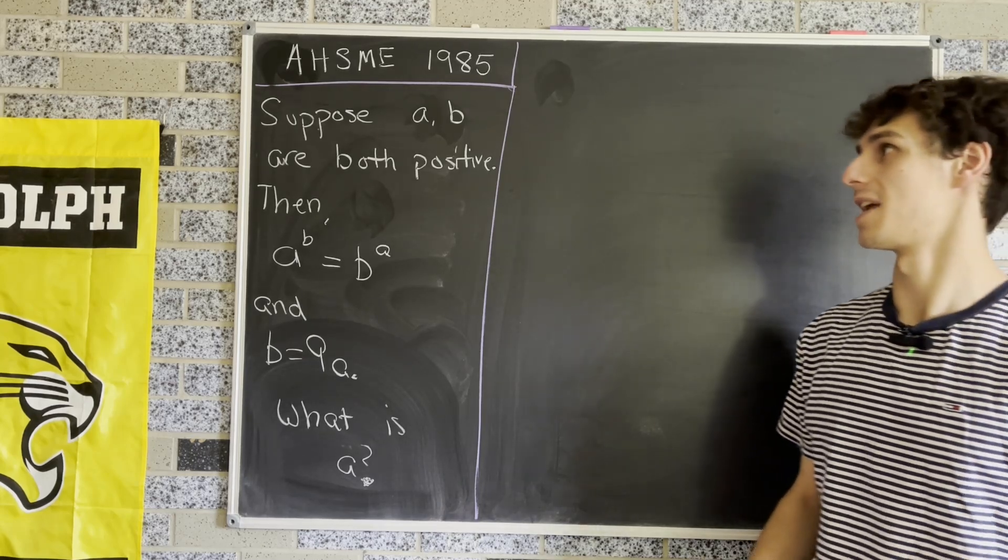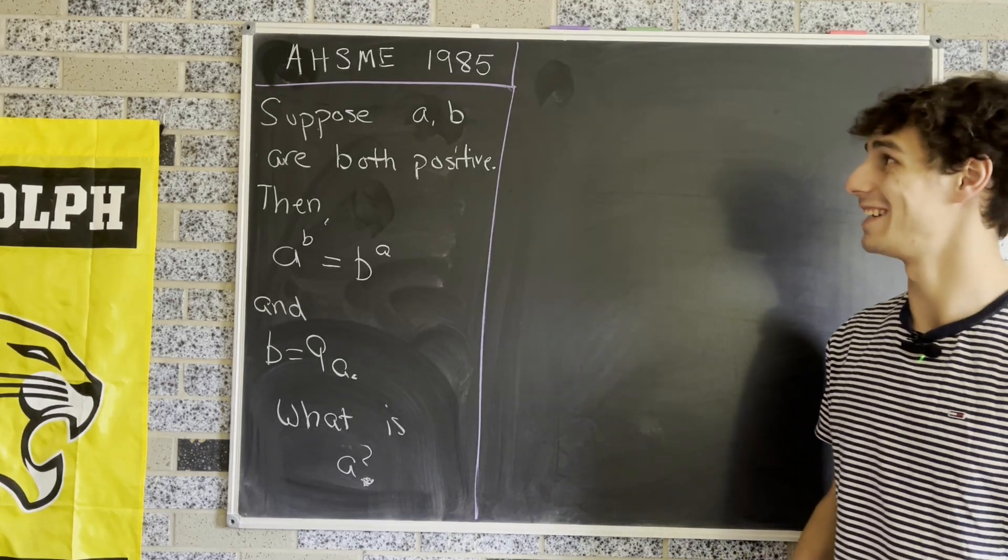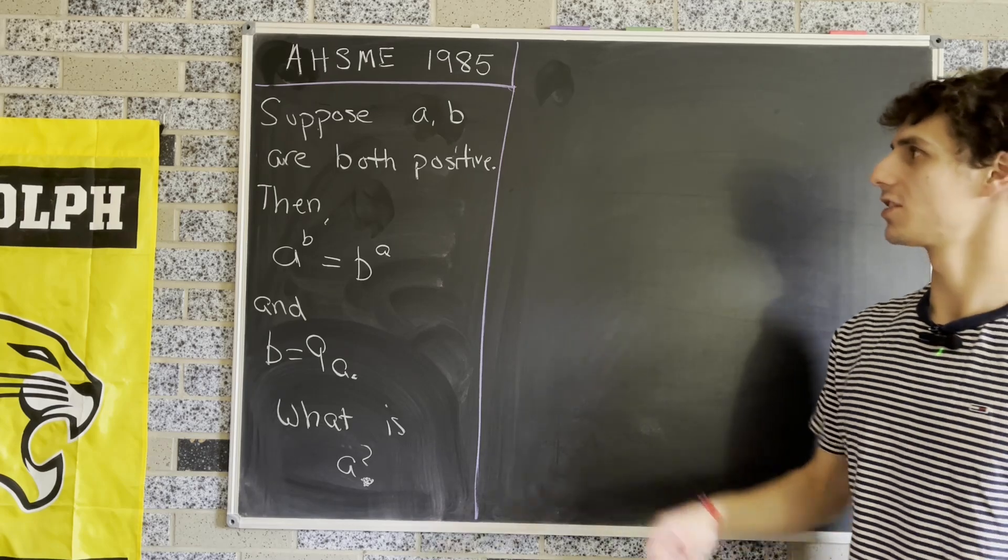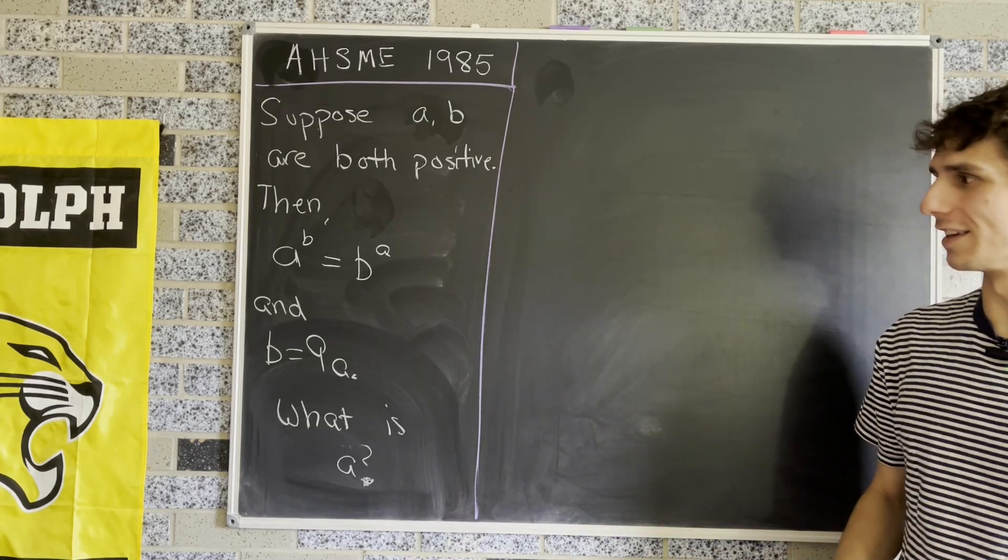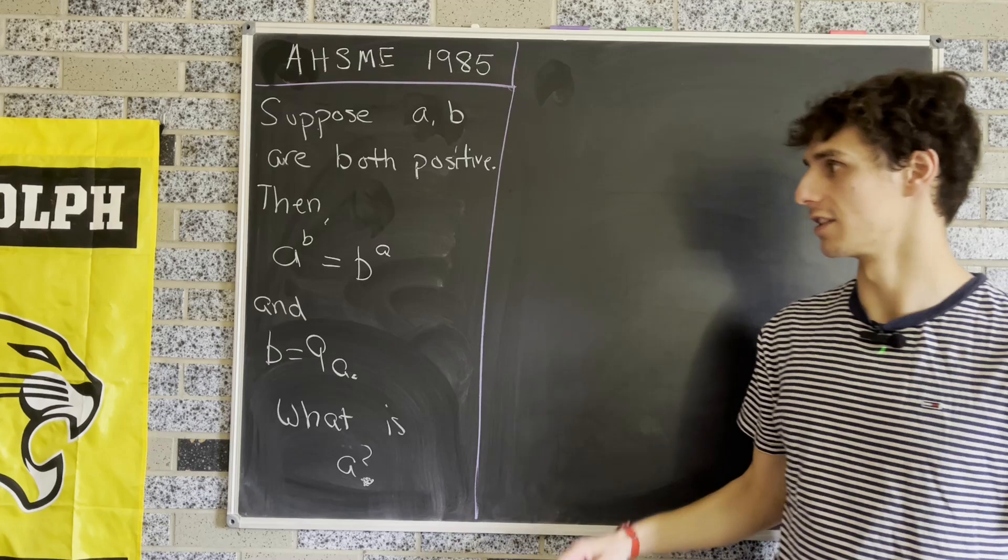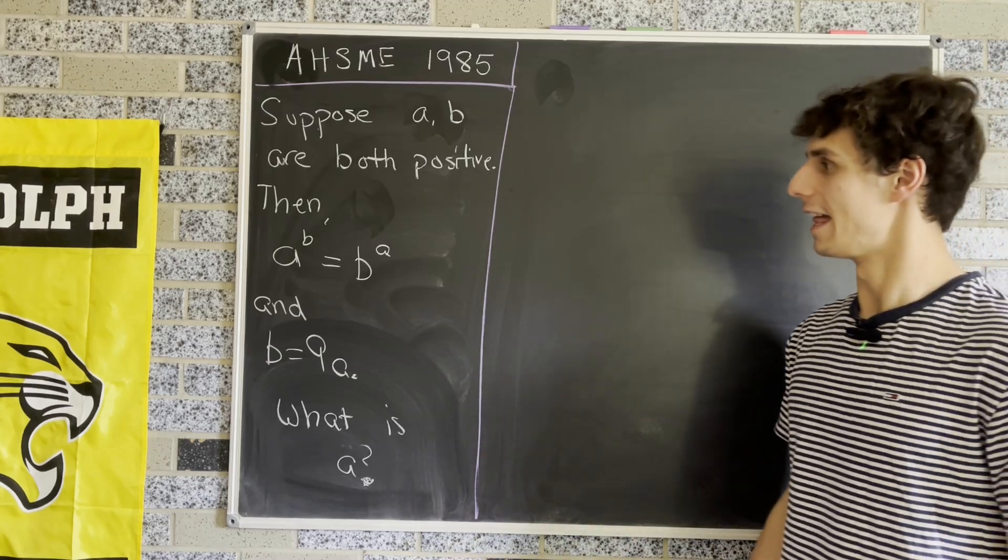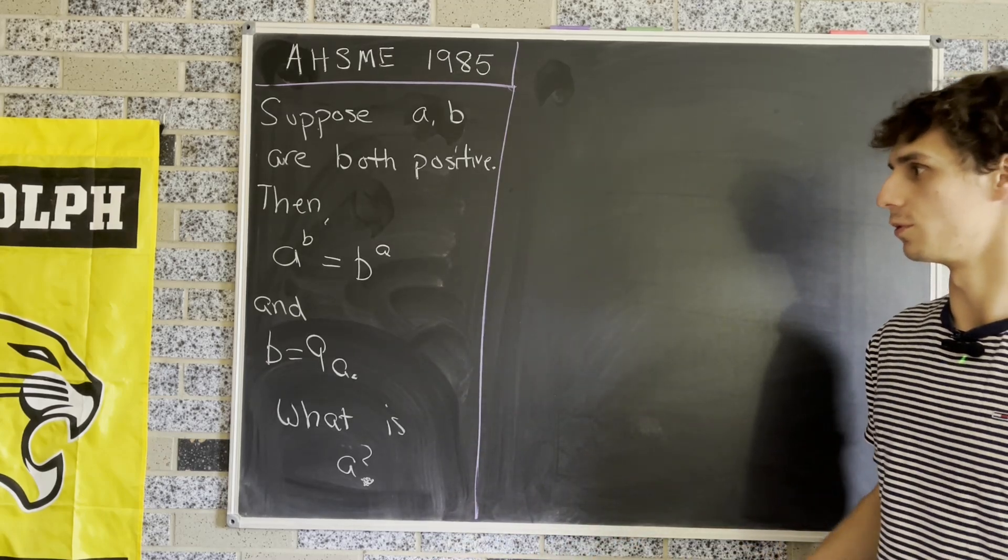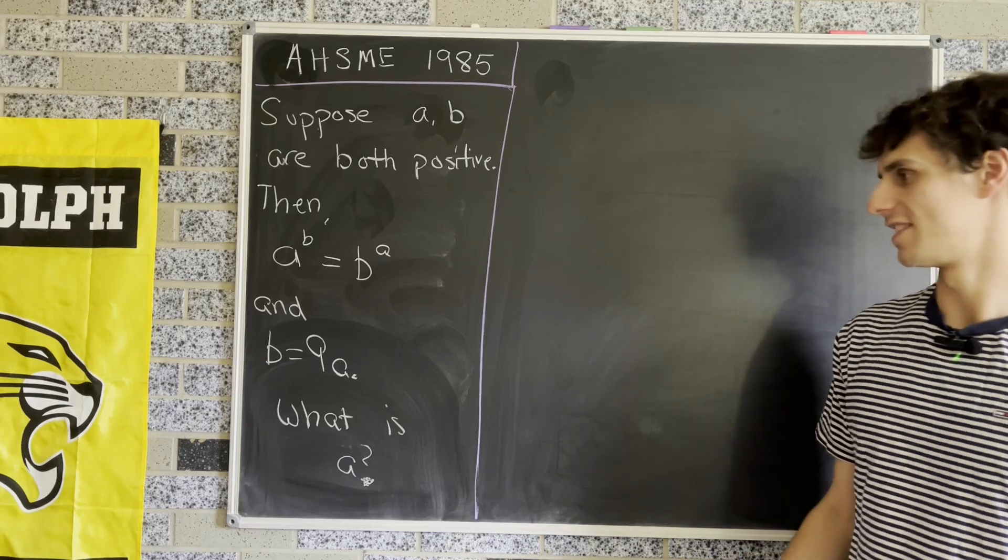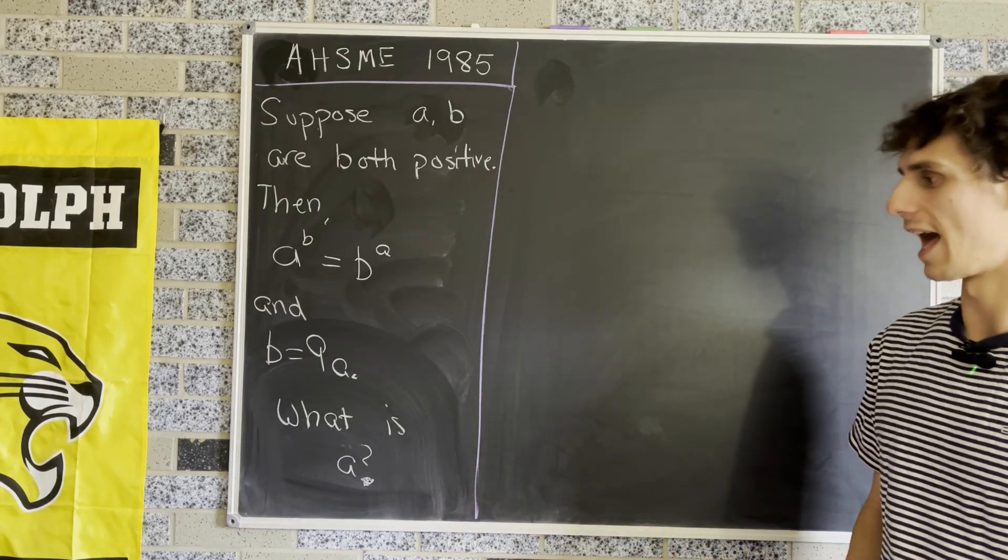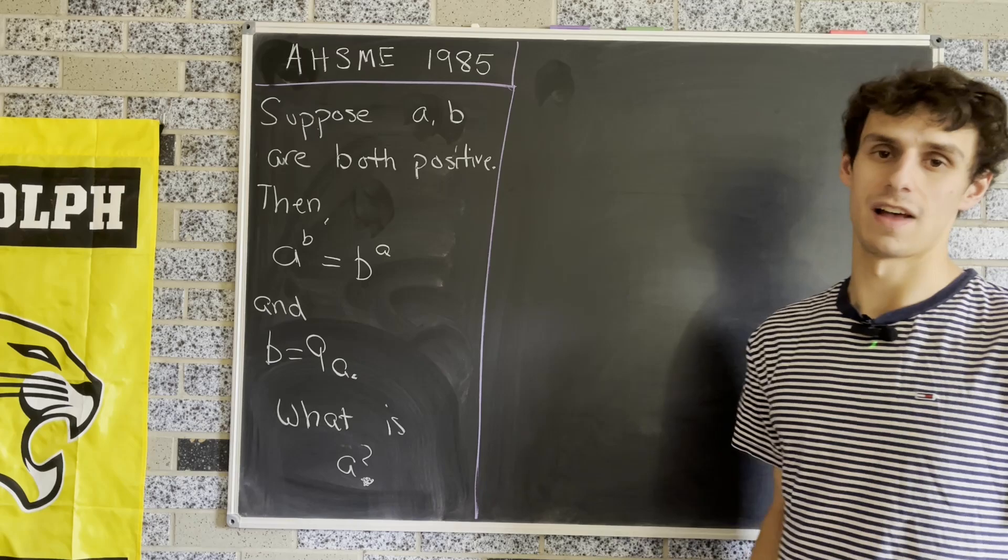Today's math puzzle comes from the AHSME math competition in 1985. It tells us to suppose that A and B are both positive and gives us two equations: first, A^B = B^A, and second, B = 9A. It asks us to find the value of A.